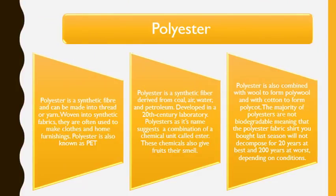Polyester is a synthetic fiber that can be made into thread or yarn, and it can be woven into synthetic fabric. It is often used to make clothes and home furnishings. Polyester is also known as PET. Polyester is made from coal, air, water, and petroleum. It was developed in the 20th century, and polyester gets its name from a combination of the chemical unit called ester.